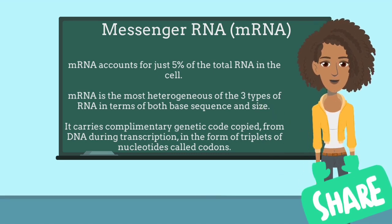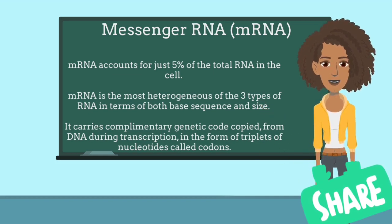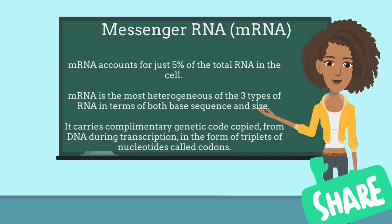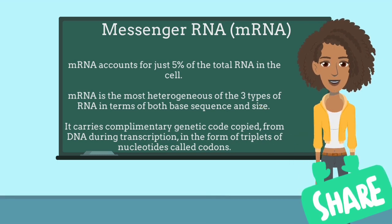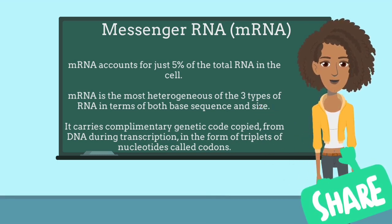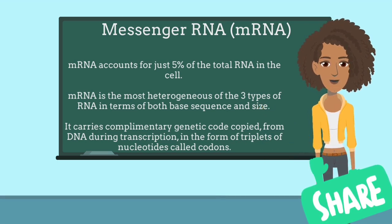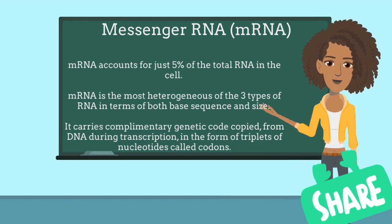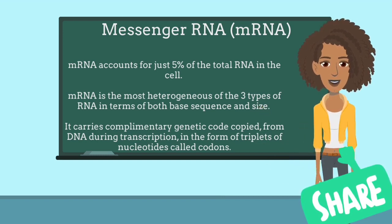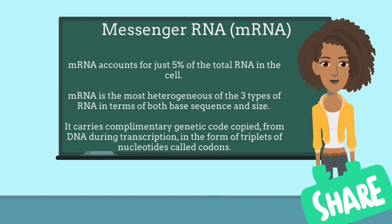As part of post-transcriptional processing in eukaryotes, the 5'-end of mRNA is capped with a guanosine triphosphate nucleotide, which helps in mRNA recognition during translation or protein synthesis. Similarly, the 3'-end of an mRNA has a poly-A tail, or multiple adenylate residues added to it, which prevents enzymatic degradation of mRNA. Both the 5'- and 3'-end of an mRNA impart stability to the mRNA.